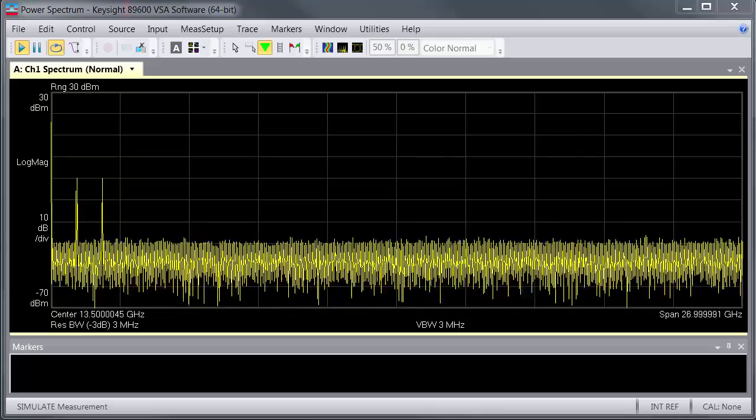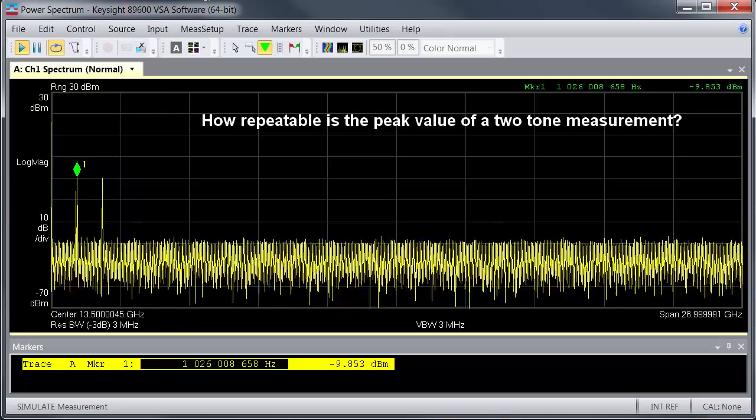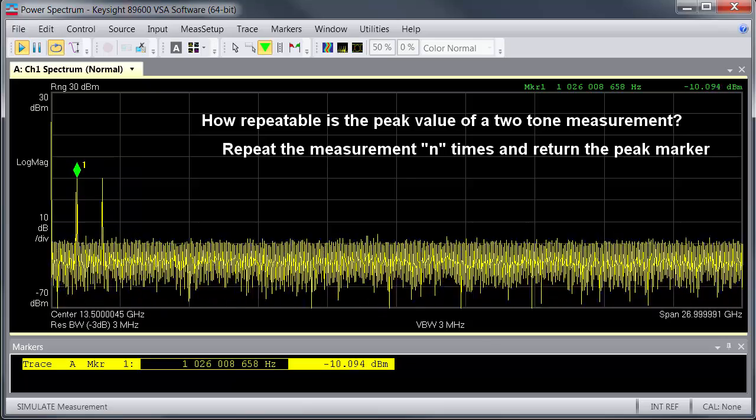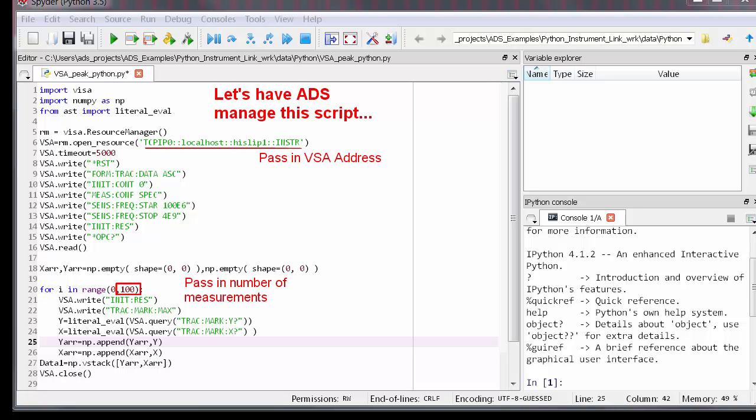Let's walk through a brief example. The Keysight Spectrum demo on the VSA emulates a two-tone measurement. I want to see how repeatable the peak value is. To do that, I'll run the measurement a number of times and return only the peak marker value for each sweep, not the whole trace. It's really easy to do this in Python. I wrote this script, which initializes the instrument and then uses a for loop to do the measurement and collect the data. The script is very simple, but this methodology will work for more complicated programs, too. Now, I want to have ADS manage things. I want to pass in the instrument address and the number of measurements to make, and then I want Python to do the measurement and return the peak marker readings back to ADS.